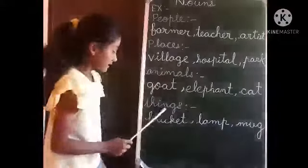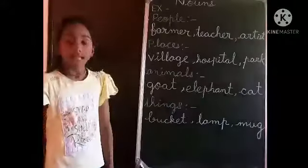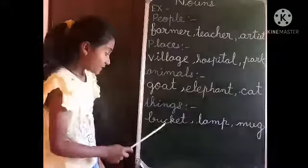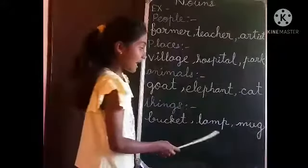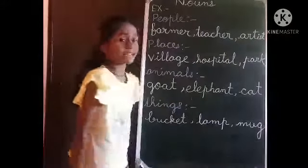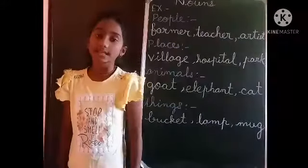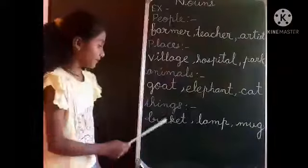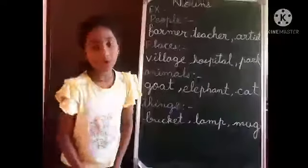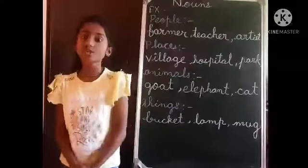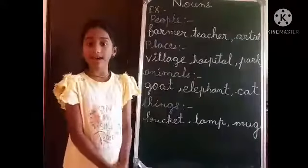Fourth, things. Names such as bucket, lamp, mug, etc. are the names of things. Hope you all understood what are nouns.